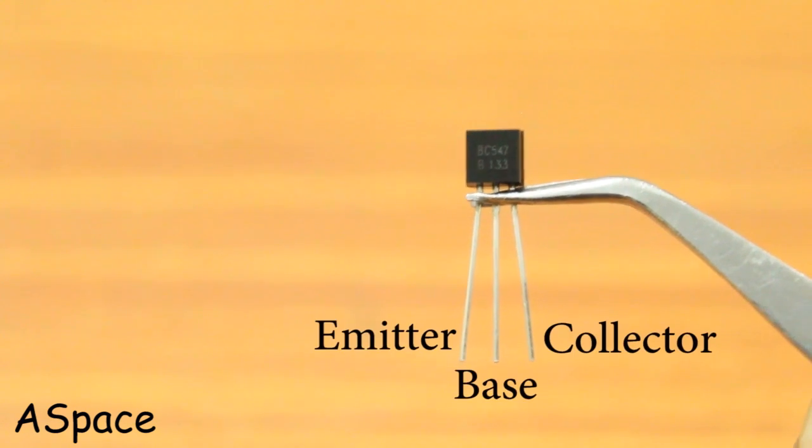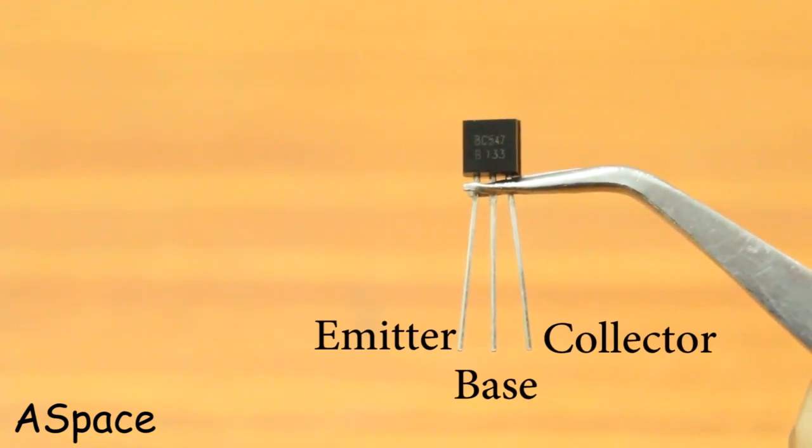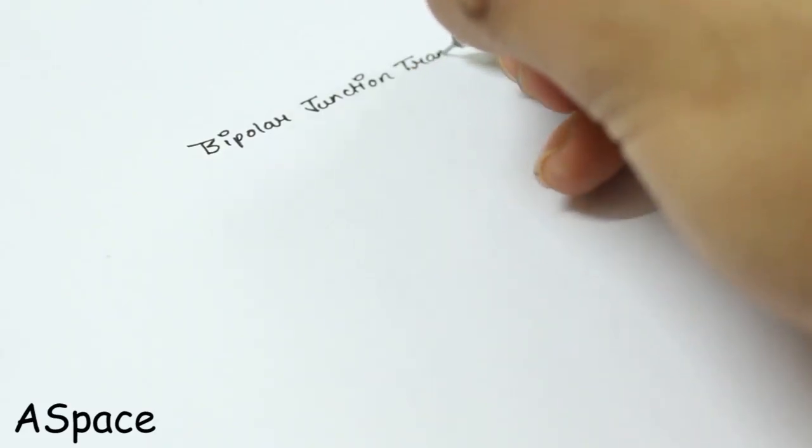The star of this circuit is BC547 BJT. Before we get into the project, let's get ready with the basics. Bipolar Junction Transistor or BJT for short.